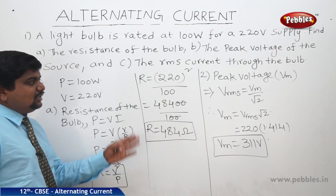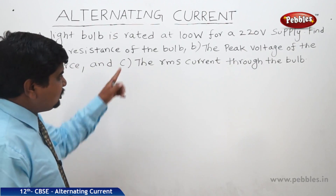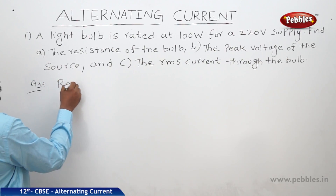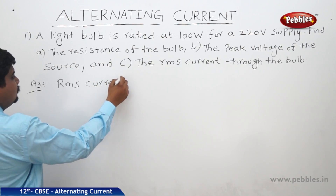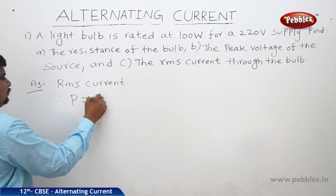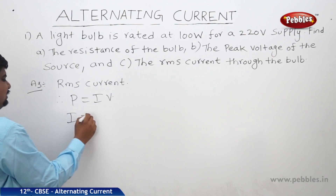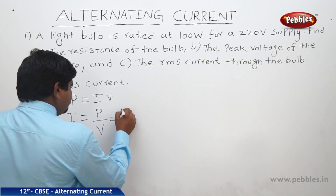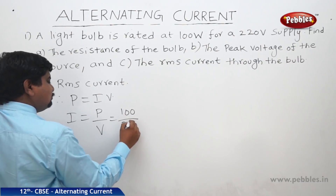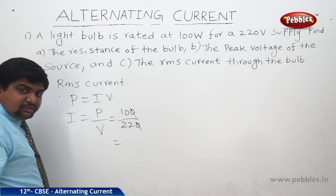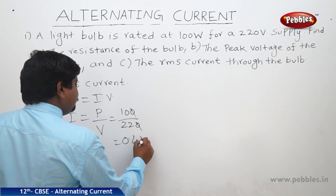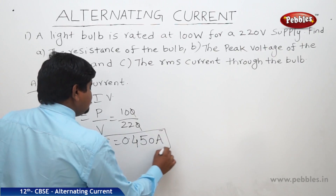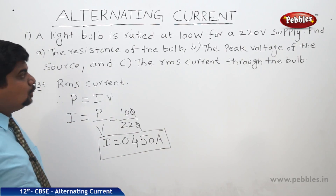The last part of the problem is finding the RMS current through the bulb. We know that P = IV, therefore I = P/V. P is 100 watts and the RMS voltage is 220 volts. So 100/220 = 10/22, which gives approximately 0.45 amperes. This is the I_RMS current through the bulb.